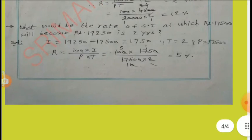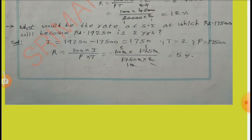What would be the rate of simple interest at which Rs.17,500 will become Rs.19,250 in two years? Here, I equal to 19,250 minus 17,500 equal to Rs.1,750. T equal to two years, P equal to 17,500. By putting these values in the formula R equal to 100 into I by PT, by simplification we get R equal to 5%.